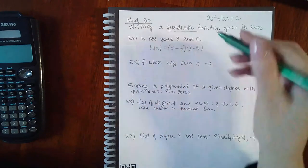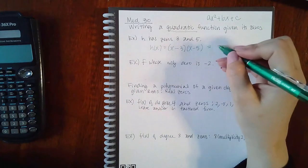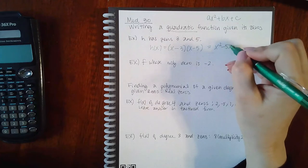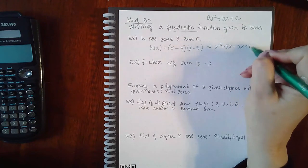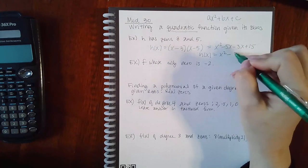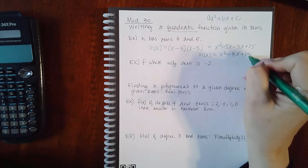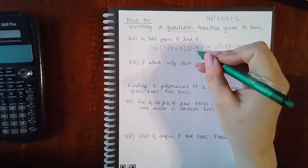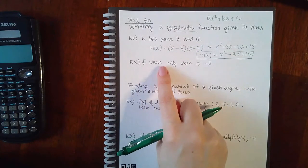You can write it like this. If it expects you to expand it out, then you'd actually have to multiply this and write the expanded version, which is x squared minus 8x plus 15.